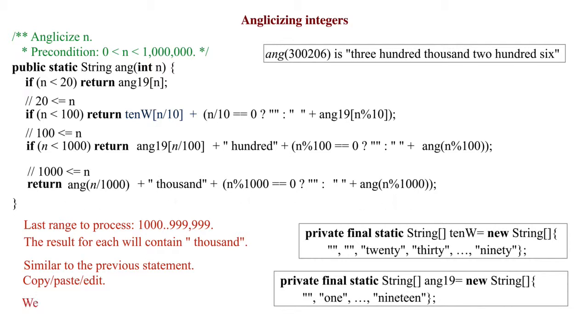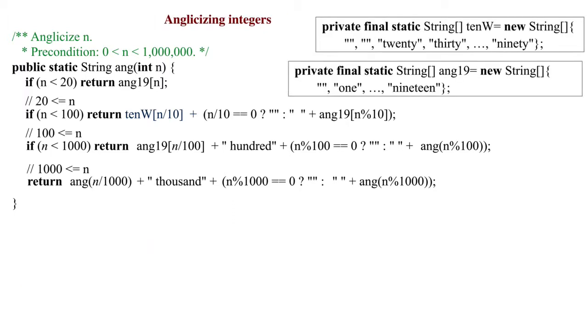That completes the development of the function to anglicize integers. Interestingly enough, it contains no assignment statements. The important points in the development were handling one case at a time, starting with the smallest range, and testing after coding the processing of each range.